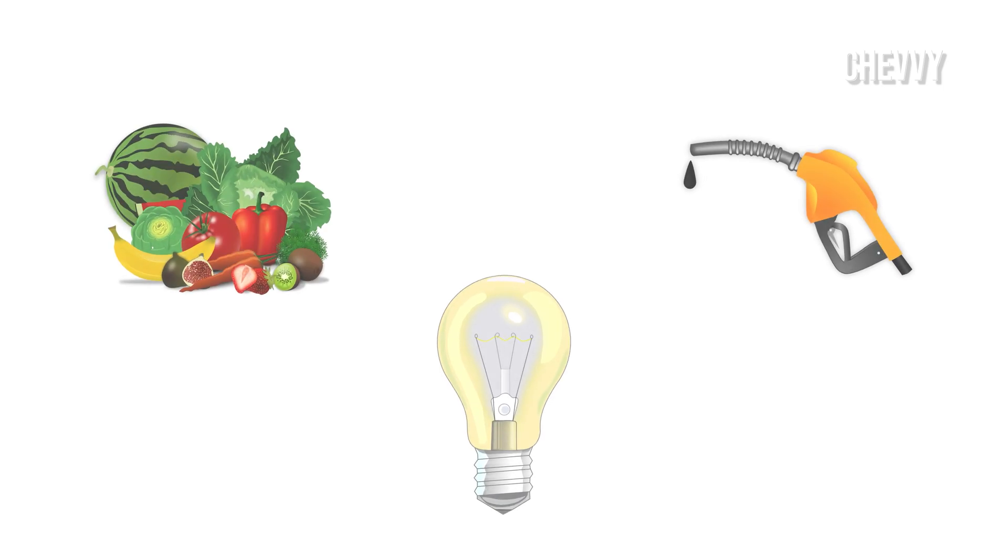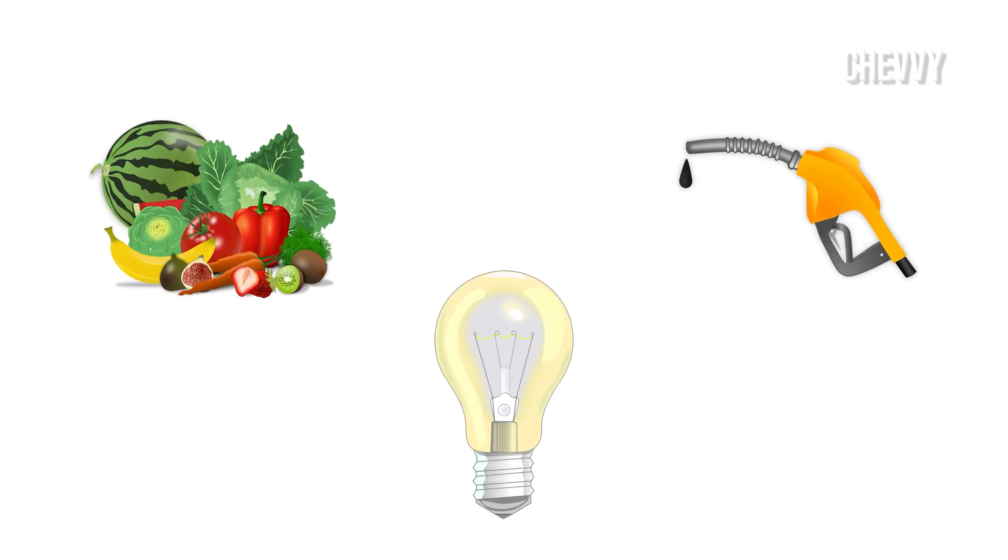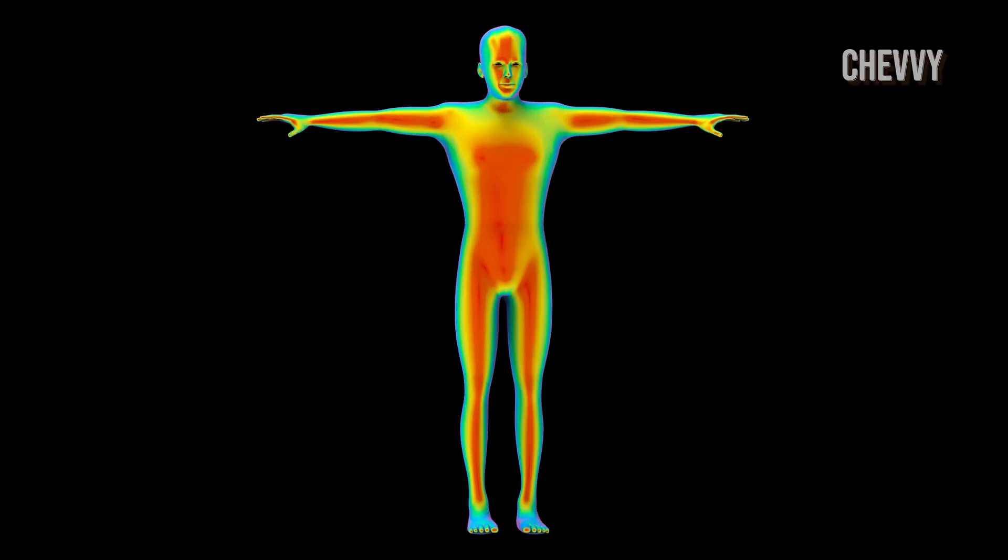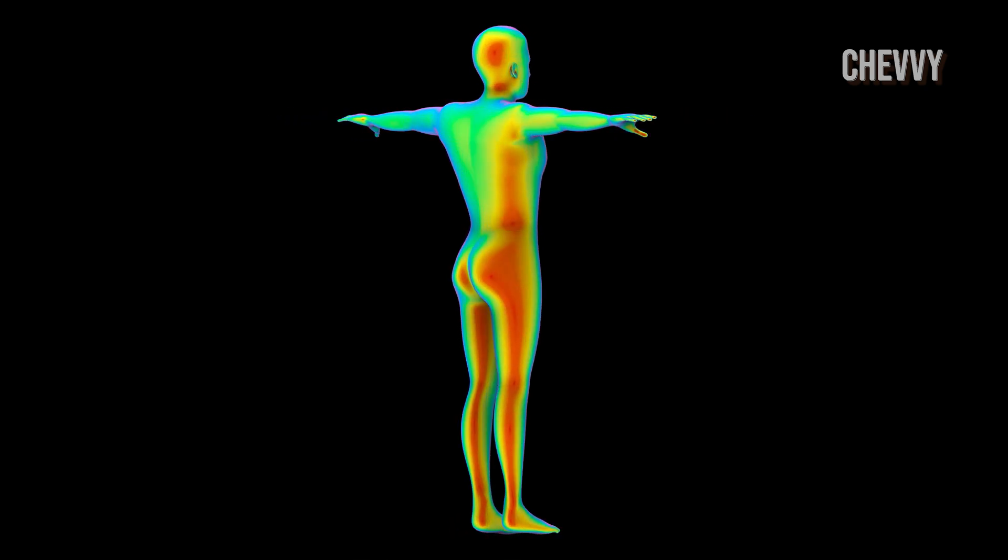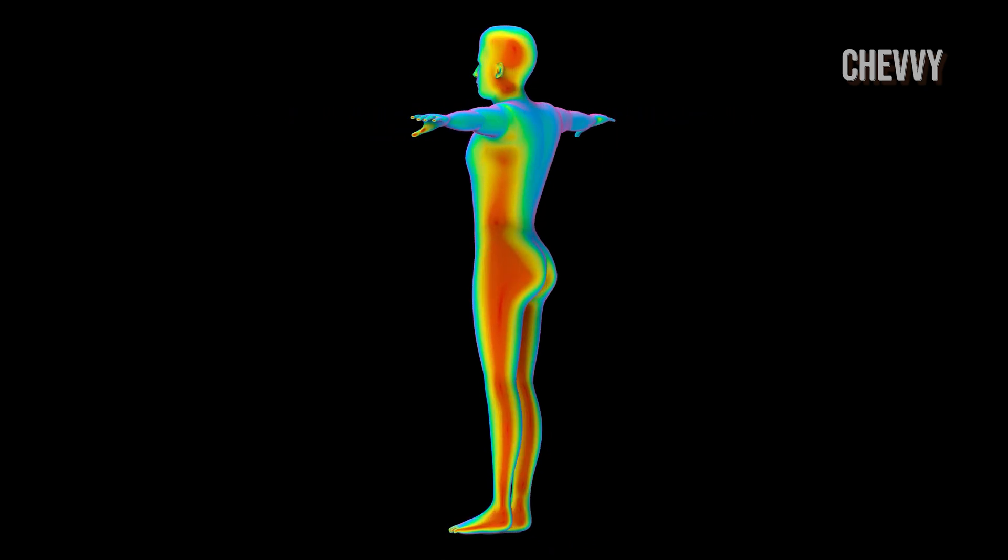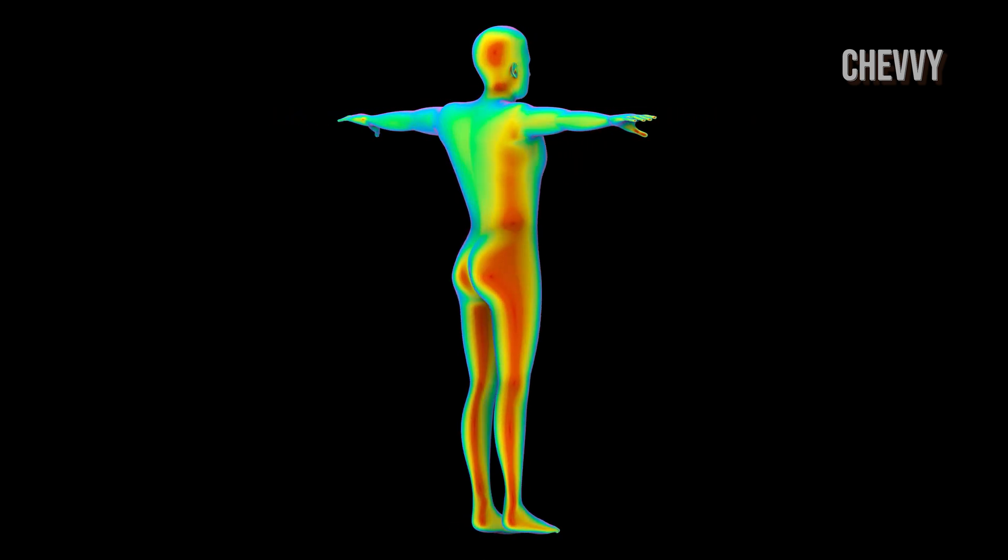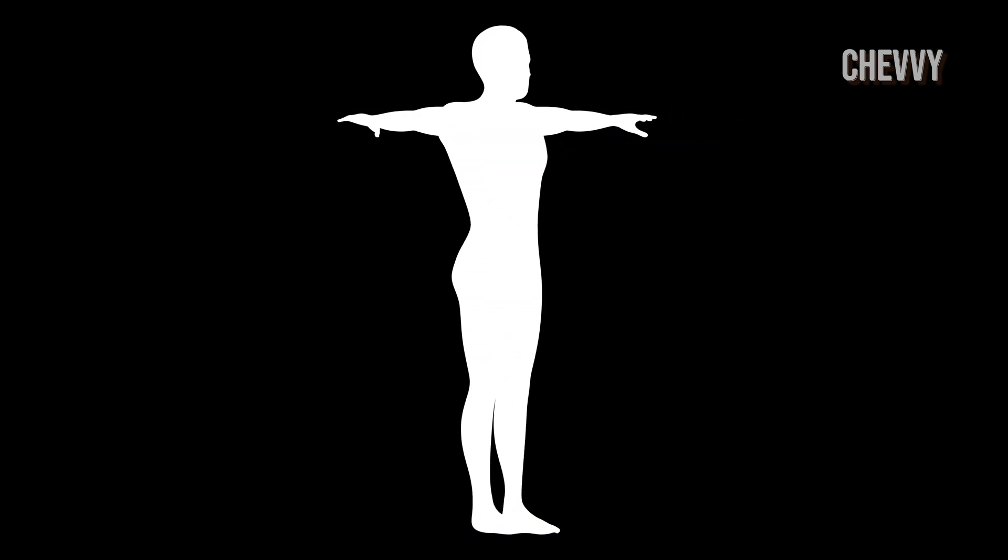The carbon cycle can be seen in the food we eat, the electricity we use in our homes, the gasoline in automobiles, and the weather. Because we are also part of the carbon cycle, our choices about how we live and how we protect the environment affect the cycle. Similarly, changes in the carbon cycle can have a huge impact on our lives.